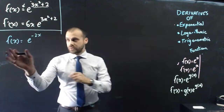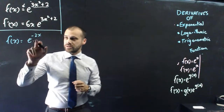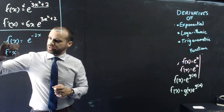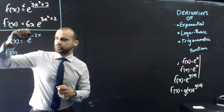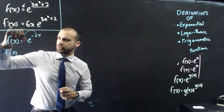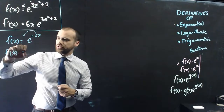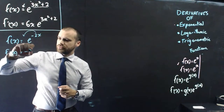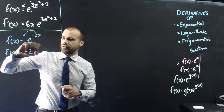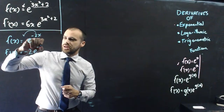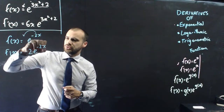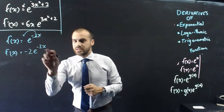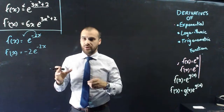If f of x equals e to the negative 2x, then f dash of x will be equal to the derivative of the exponent coming out the front. So negative 2 is the derivative, and then e to the negative 2x - that thing stays exactly how it was.